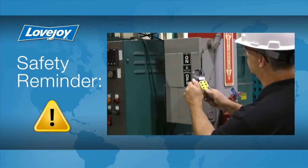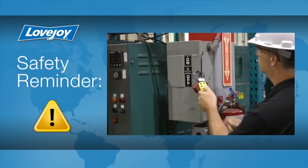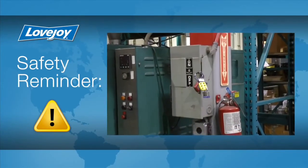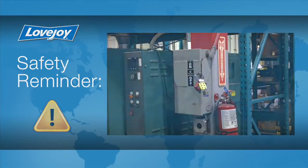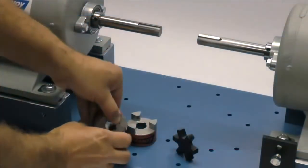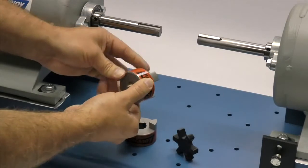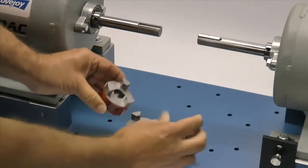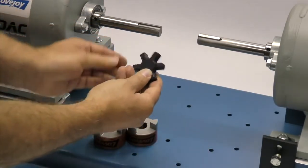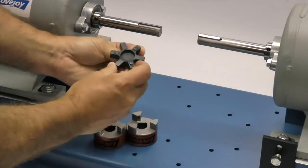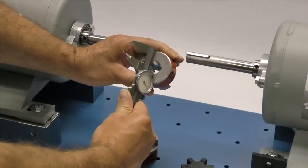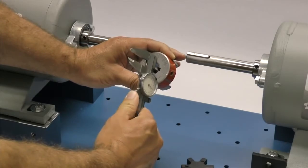Even though we have disconnected the power to this system, it is always a good idea to check and ensure that the power is off. When you receive the coupling, you should inspect each component to ensure that there are no visible defects, cracks, or damage from shipping. You may want to check the bore size for accuracy prior to continuing with the installation.